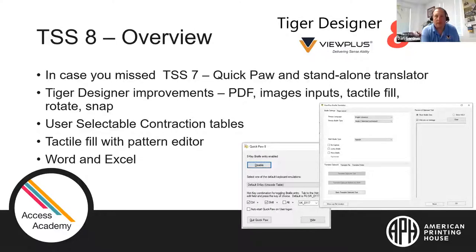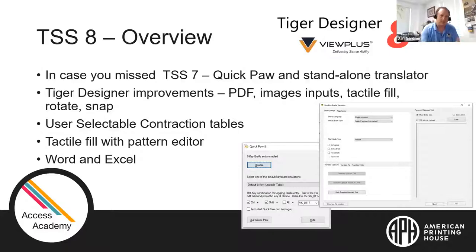Tiger Designer improvements in TSS 8: we now support PDF import — that's the first demo I'll show. Images you bring in are much cleaner. We did a major overhaul for the tactile fill libraries, supporting much broader depth as well as how you can apply them. And there are new user contraction tables. These are all the big new features, as well as some new features inside of Word and Excel.